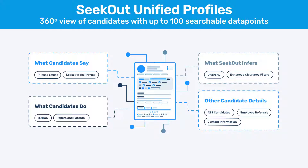There are also things that candidates do. In this session, we'll be covering GitHub — not a profile of work experience, but a repository of their code and contributions. We'll also touch on expert access, where you can search for people who've contributed to papers, patents, etc. We combine contact information, ATS data, and all of these sources into a single 360-degree candidate profile right on SeekOut.